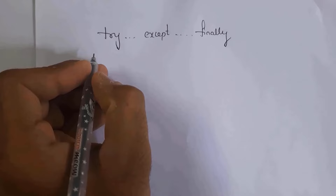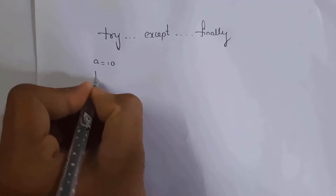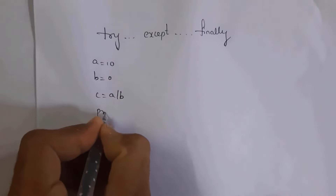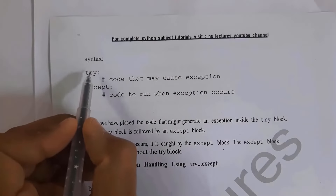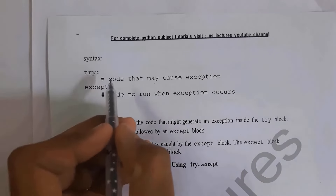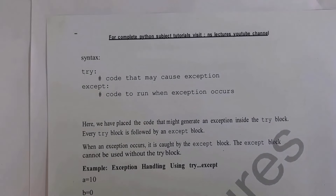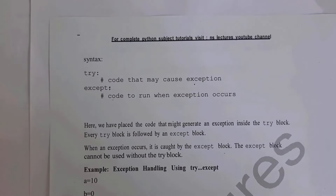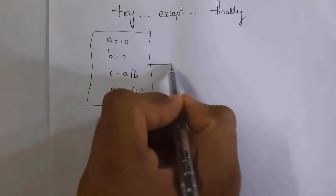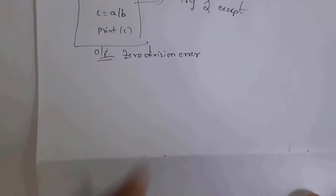Next I'll explain how to handle exceptions. We can handle exceptions by using try, except, and finally blocks. The syntax of the try and except block is: write 'try' with a colon, and inside the try block you place risky code — that is, code that may cause an exception. Then you write the except block. If an exception does not occur, whatever code is inside the try block will be executed. If an exception does occur, whatever code is inside the except block will be executed.